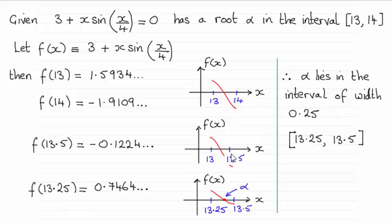We have to do interval bisection twice over. So I now know that I need to cut this interval in half. So that's going to be 13.25.